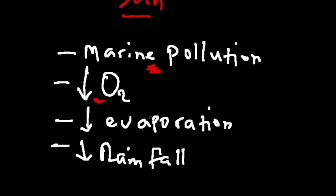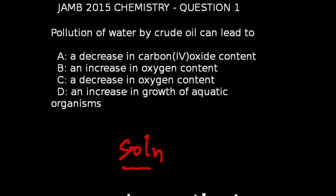Pollution of water by crude oil can also lead to a decrease in evaporation, because the oil tends to cover the surface of the water, and that will also lead to a decrease in rainfall. So crude oil pollution can directly or indirectly affect us as humans and also marine life. Therefore, the correct answer to this question is a decrease in oxygen content, which is option C.